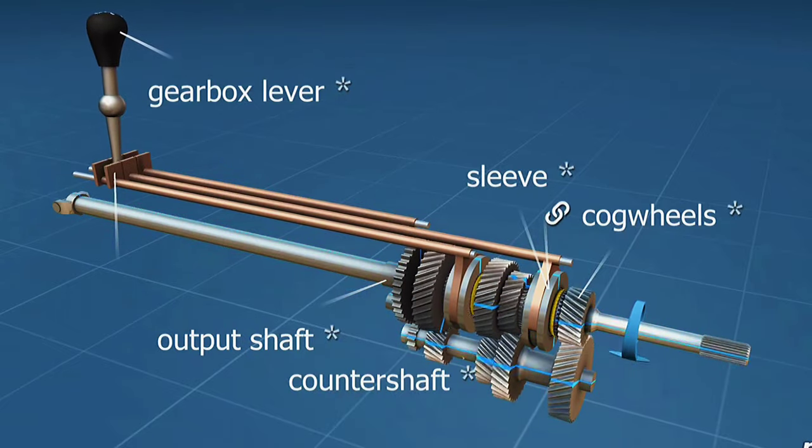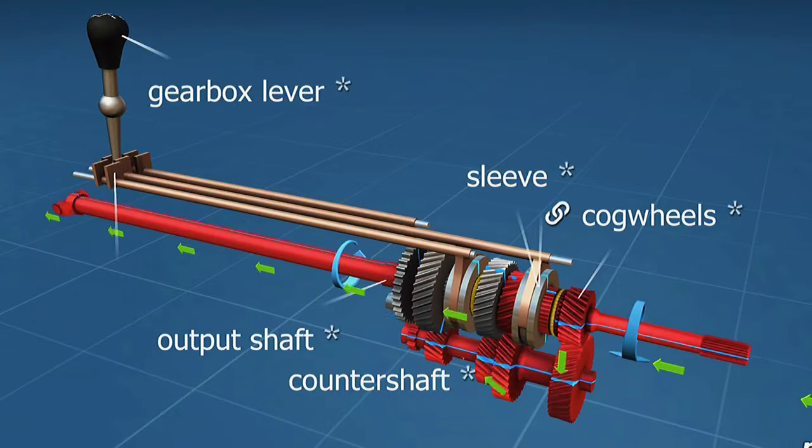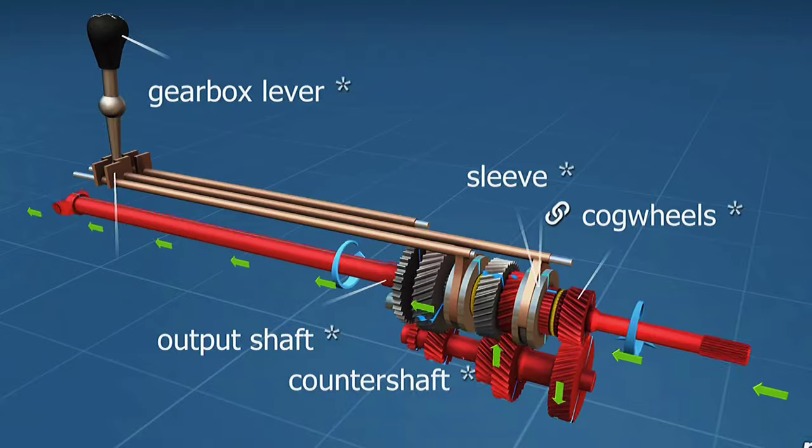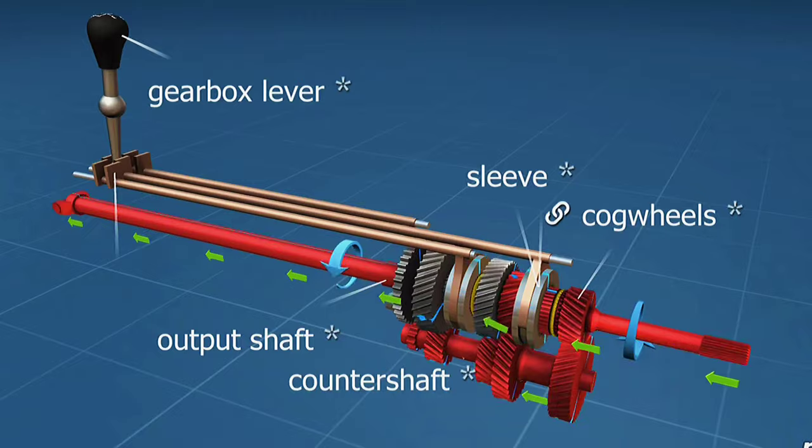In third gear, the sleeve fixes the third gear to the shaft. The drive goes through the third gear on the lay shaft and the third gear on the spline shaft. The speed is increased while the torque is being lowered.